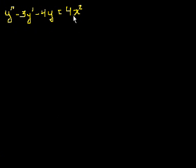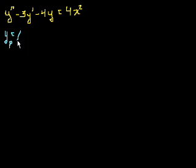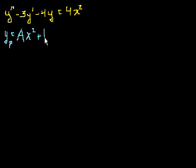What's a good guess for a particular solution? When we had exponentials, we guessed an exponential. When we had trigonometric functions, we guessed trigonometric. Since we have a polynomial making this equation non-homogeneous, let's guess that the particular solution is a polynomial — and that makes sense. If you take a second degree polynomial, take its derivatives and add and subtract, you should get another second degree polynomial. So let's guess that it is ax squared plus bx plus c.